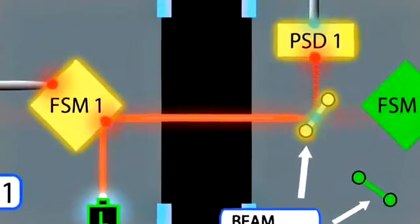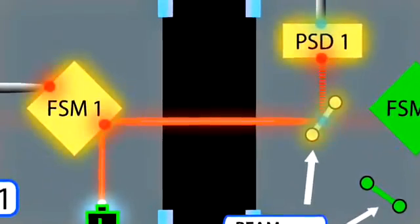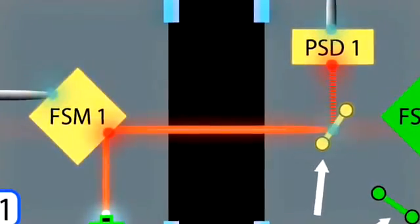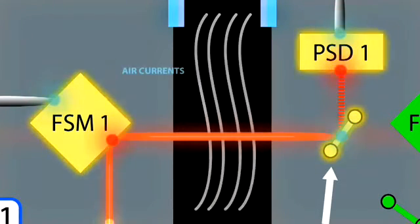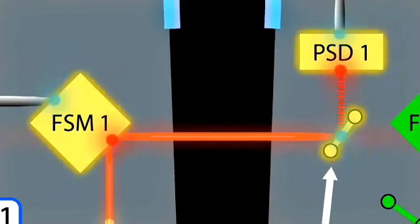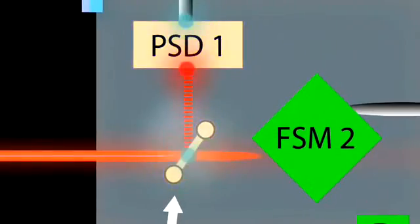This signal steers the mirror in pitch and yaw to stabilize the position of the beam on the position sensing detector, correcting for pointing errors due to conditions such as air currents, thermal gradients, or motion of the two tables relative to one another.